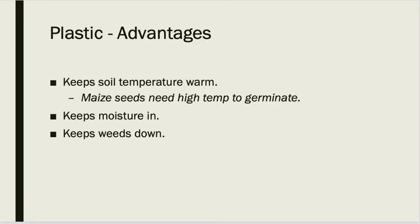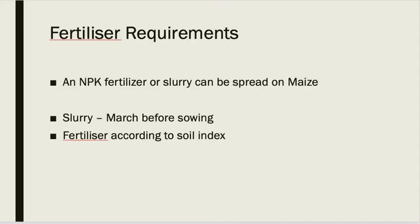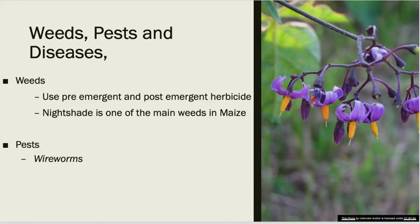To summarize the advantages of the plastic: it keeps the soil temperature warm, which is needed for germination above 10 degrees Celsius; it keeps moisture in; and it keeps weeds down. For fertilizer requirements, maize can benefit from both slurry and artificial fertilizer. If using slurry, you would plough it in during March before sowing — maize can actually take quite a lot of slurry. If using artificial fertilizer, you apply it according to your requirements depending on your soil index.